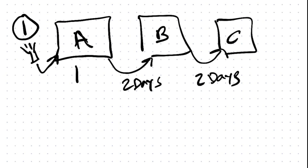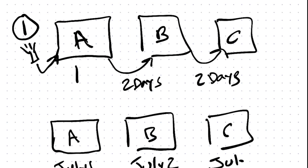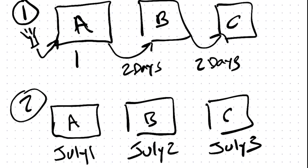Now, Thrive Apprentice does not do this by default. The other way to drip courses is with the same three modules, but instead of a time delay, you give an exact date that the student gets access. So Module A is available on July 1, Module B on July 2, and Module C on July 3. These are the two ways to drip out courses using Thrive Apprentice and a tool called Wishlist Member.